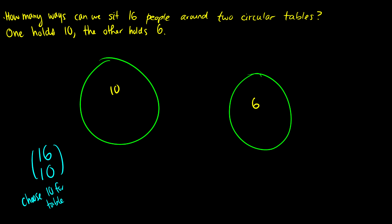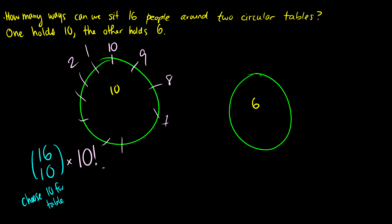Now we have to seat these 10 people. There are 10 factorial ways to seat all the people at a round table. However, if we rotate everyone one position that's the same arrangement, so there are 10 possible rotations that are all equivalent. We divide by 10, giving 10 factorial over 10, which equals 9 factorial arrangements for those 10 people.